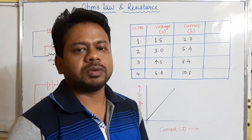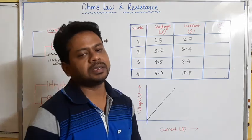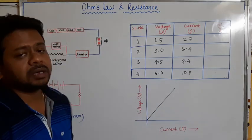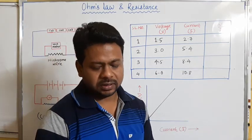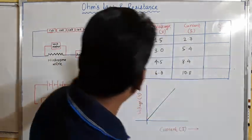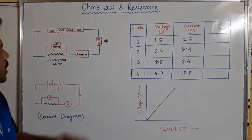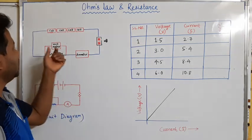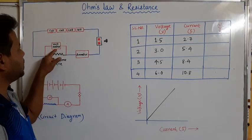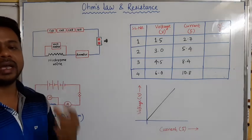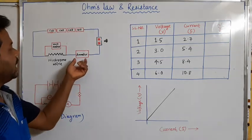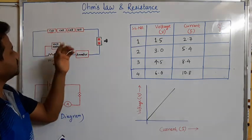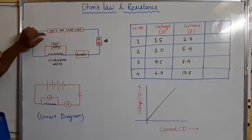Hello friends, today we'll discuss about Ohm's Law and resistance. Before discussing about Ohm's Law, let's do an activity. For this activity we need four cells of 1.5 volt each, one voltmeter, one nichrome wire which acts like a resistance, an ammeter, and a key switch — so these five things we need.